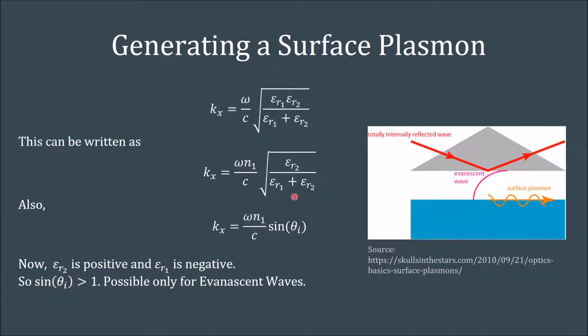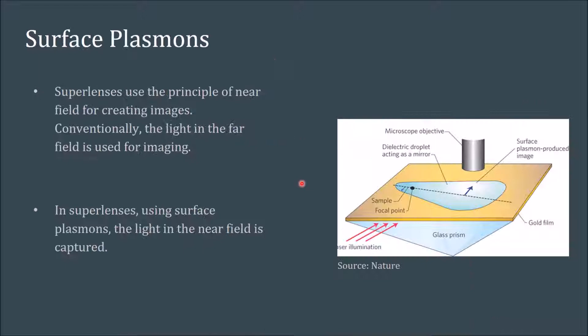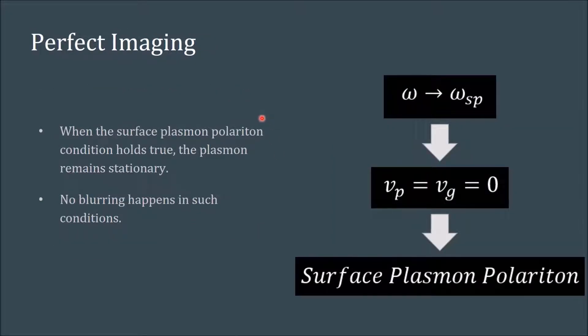One of the most interesting applications of surface plasmons is superlens. Superlens find their applications in biomedical field and nanoscale field where images from a normal camera don't work. Near field is used for the creation of images across a metal film in superlens. The glass prism shown in this figure is used to create evanescent waves to create surface plasmons on the surface of the metal, gold in this case. The plasmon thus formed is captured by the microscope objective. As we have seen earlier, as omega tends to ωsp, both the phase and group velocity tend to zero. In this case the plasmon is called a surface plasmon polariton. What this means is that the information remains stationary and can be captured efficiently by the objective. This results in no blurring and is also called as perfect imaging.